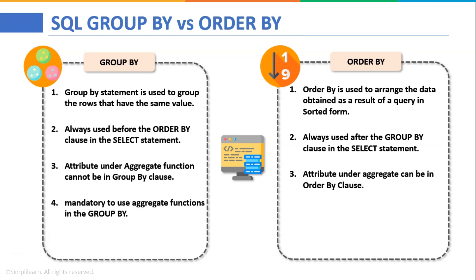Now in GROUP BY it is mandatory to use one of the aggregate functions like count, sum, average, minimum, maximum etc. whereas in ORDER BY statement it is not compulsory and mandatory to use the aggregate functions.